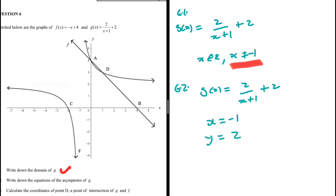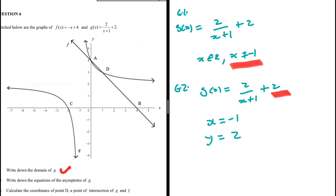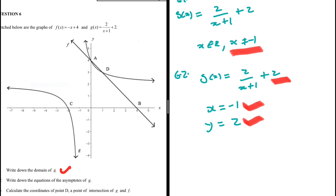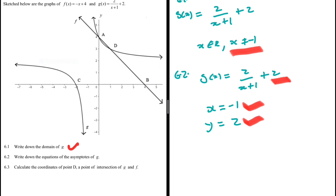Why is y = 2 an asymptote? For g(x) to equal 2, the fractional part would need to be 0, which is impossible. That part can get very close to 0 but will never actually reach 0, meaning y will never equal 2. So x = -1 is the vertical asymptote and y = 2 is the horizontal asymptote.